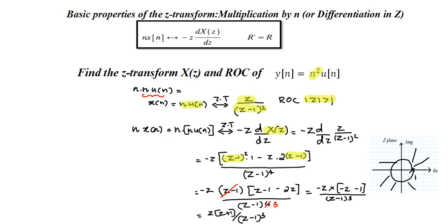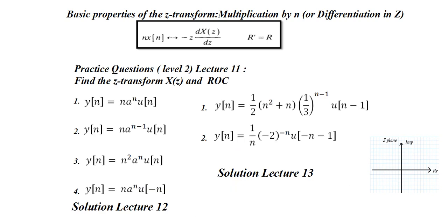So one question is n·u[n] and the second one is n²·u[n]. In the next lectures we will discuss some advanced level-2 questions. The solutions will be discussed in lecture 12 and lecture 13, so please watch those. Before that you can attempt all these questions. A slightly modified question is n·aⁿ·u[n] — for this you can consider aⁿ·u[n] as x[n].